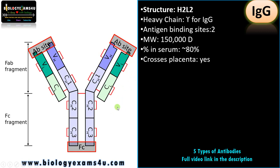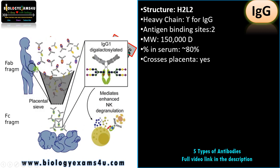IgG can cross the placenta — it is the only antibody that can do so. This antibody crosses the placenta, reaches the fetus, and is responsible for the protection of the fetus. During the developing stage, the immune system is gradually developing in the fetus, so IgG offers protection at that stage.